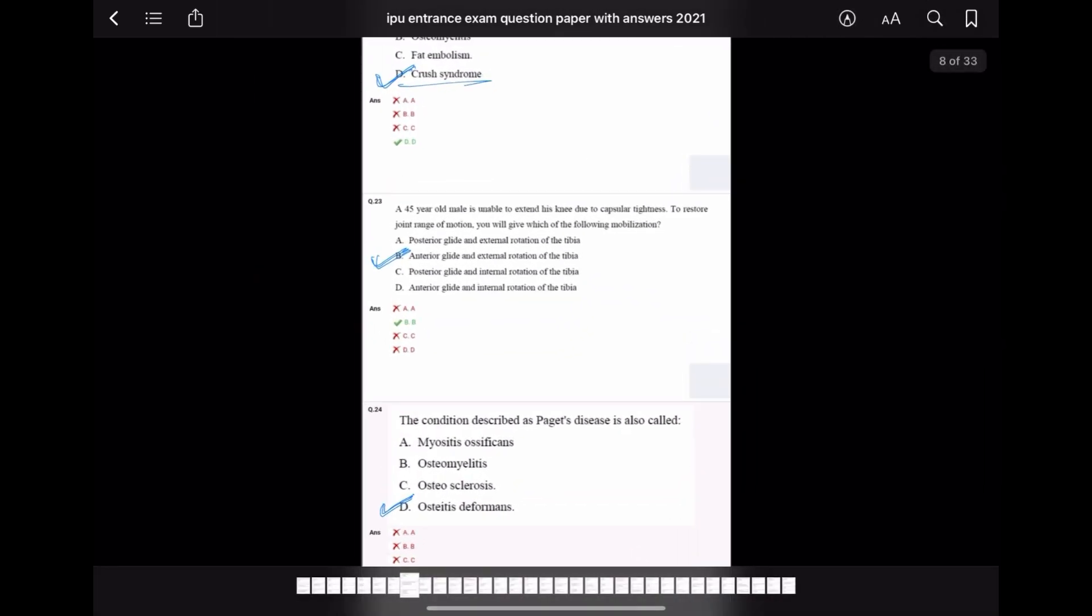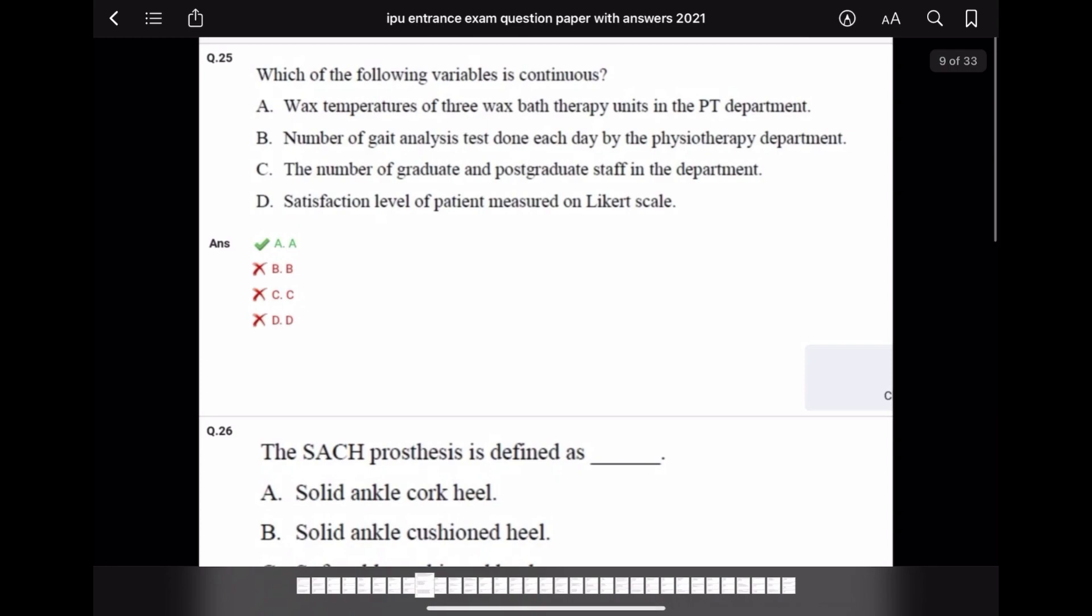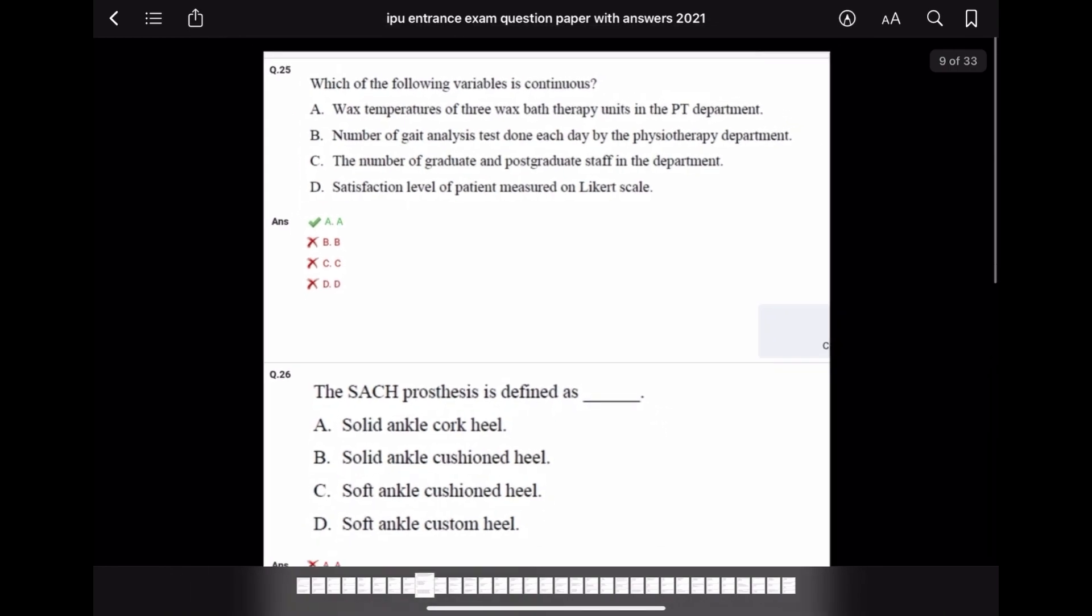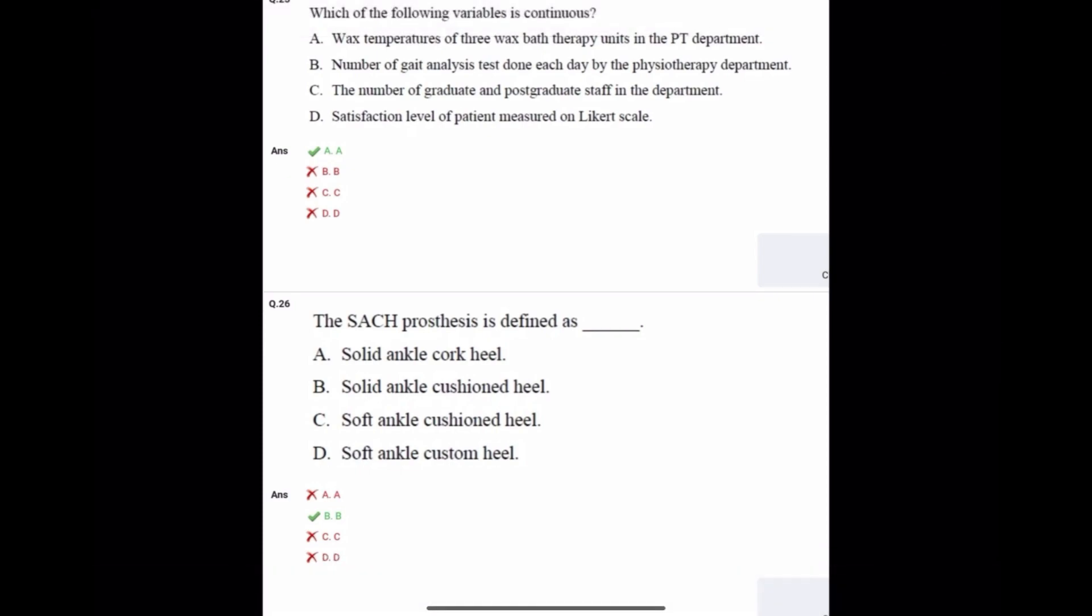Question number 25: Which of the following variables is continuous? Temperature of wax bath therapy units in the PT department, number of gait analyses done each day by the physiotherapy department, number of graduate and post graduate staff in the department, or satisfaction level of patients measured on Likert scale.